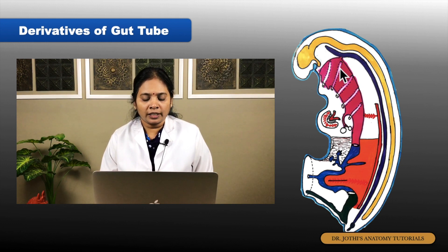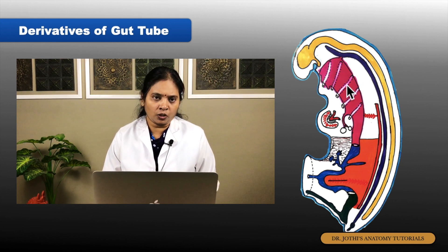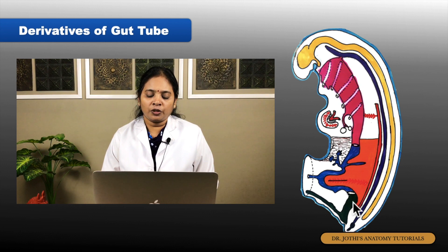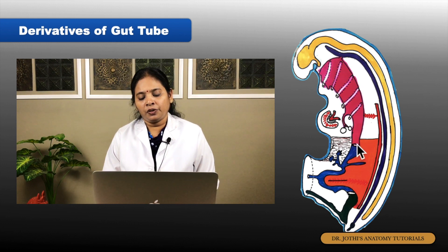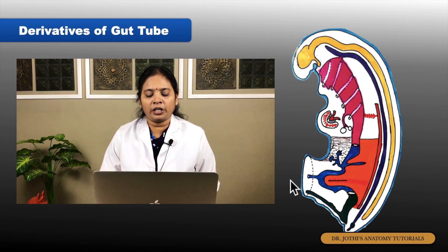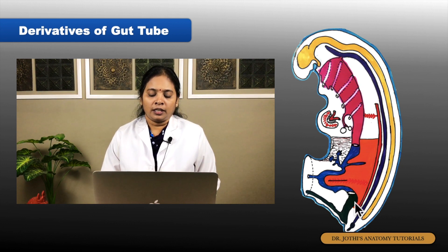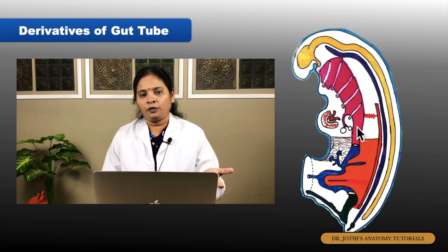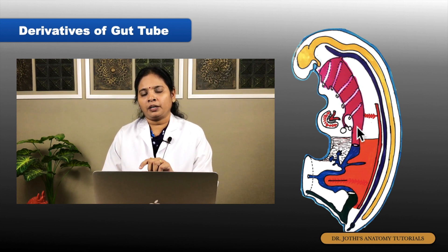The entire gut tube is divided into three portions: foregut, midgut, and hindgut. The foregut is the part of the gut tube formed within the head folding. The hindgut is the part formed by the tail folding. The intervening part between the foregut and hindgut, which communicates with the umbilical vesicle — that extra-embryonic communication — is called the midgut.